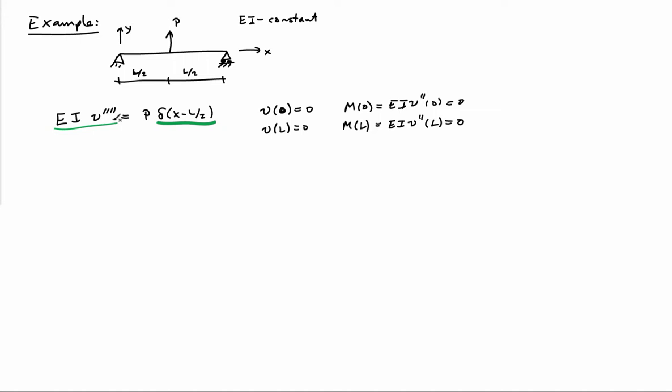The boundary conditions are that we have a pin. So that means that there's no deflection at x equals 0 or x equals L. And because it's a pin, it's free to rotate, so there's no moment at x equals L or x equals 0.